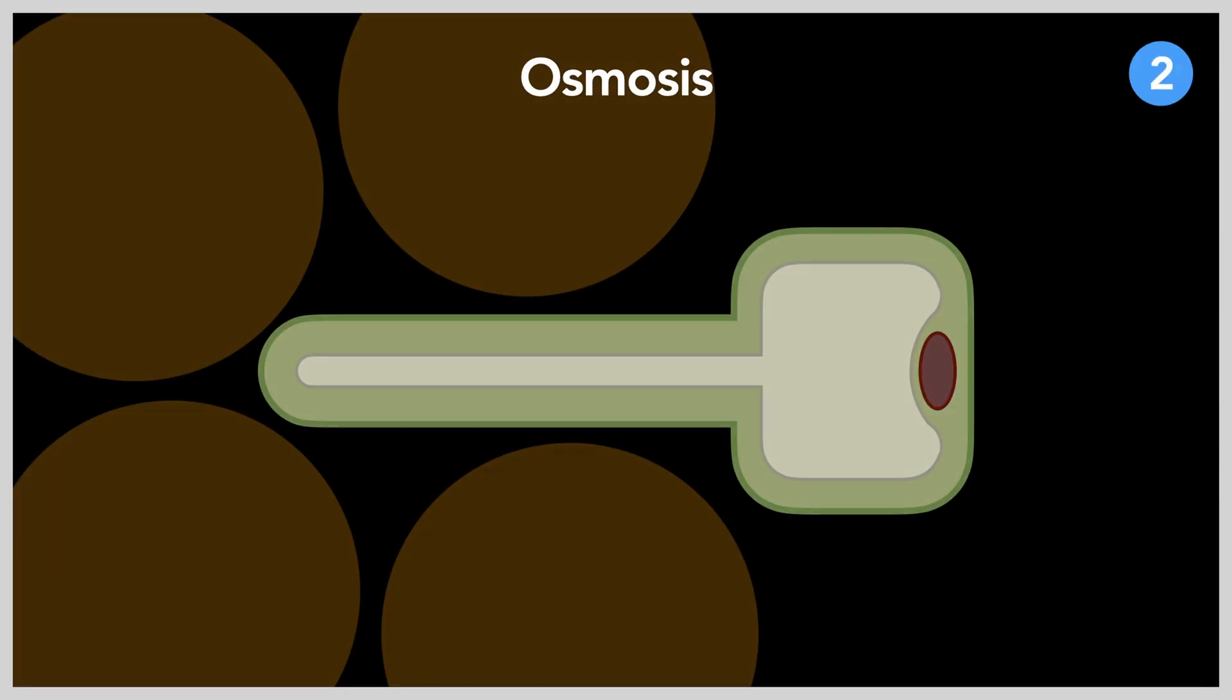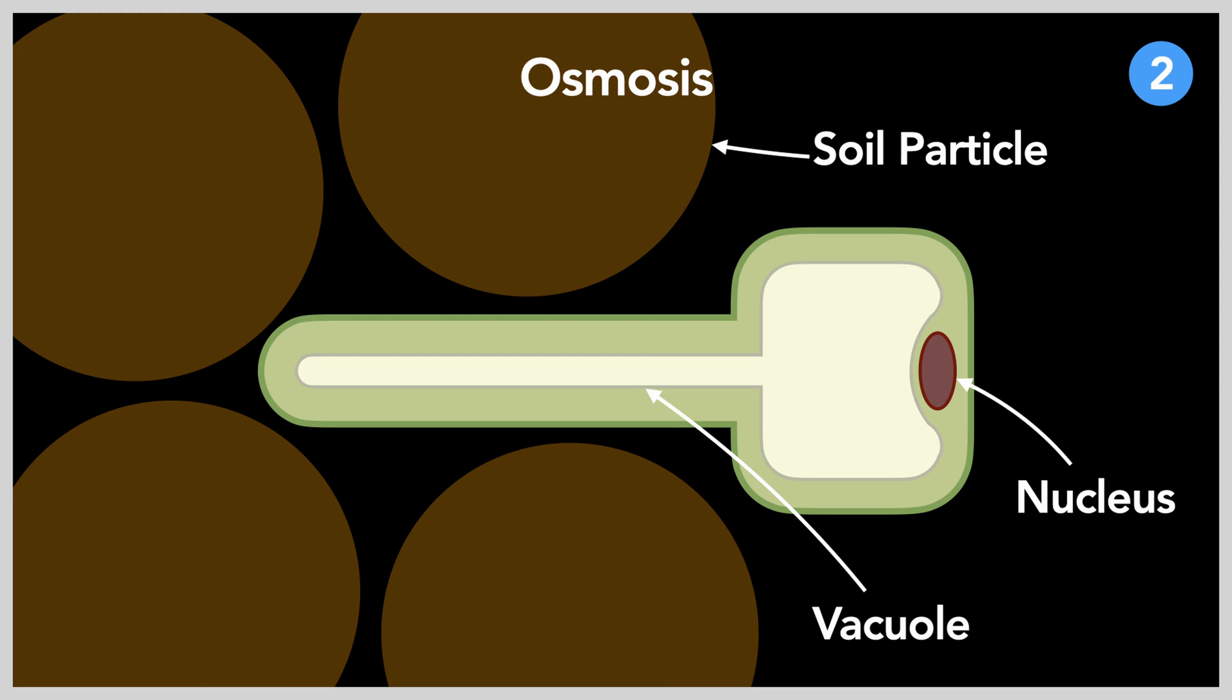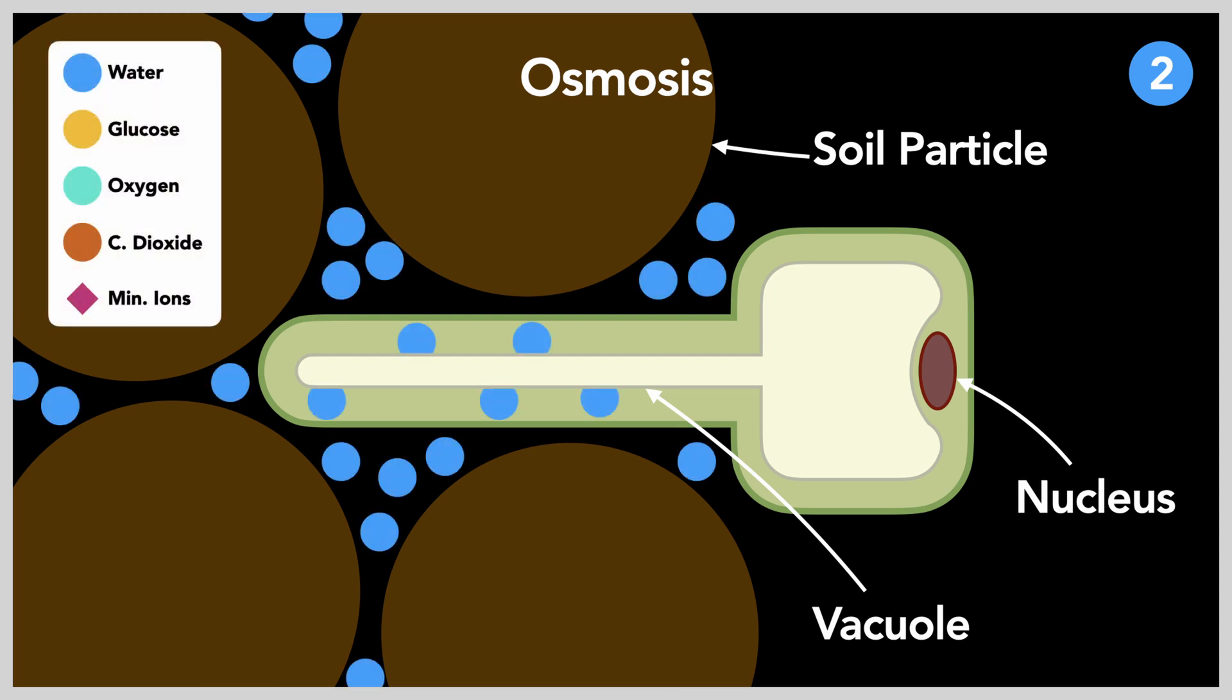Water is absorbed into the root hair cell through osmosis, the movement of water along a concentration gradient. The water concentration in the soil is higher than the water concentration in the cell's cytoplasm, which is the jelly-like substance organelles are suspended in. Vice versa for dissolved mineral salts.